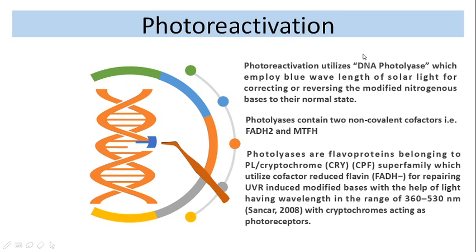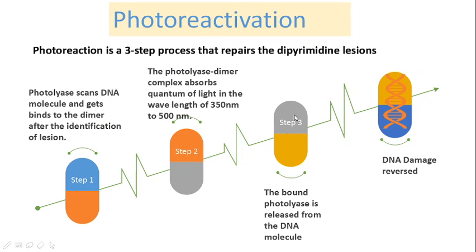In this photoreactivation, it utilizes DNA photolyases which employ a blue wavelength of solar light for correcting or reversing the modified nitrogenous bases to their normal state. These photolyases are flavoproteins belonging to the photolyase/cryptochrome (CPF) superfamily, which utilize a cofactor FAD for repairing the UVR-induced modified bases, with the help of light wavelength in the range of 360 to 530 nanometers, with cryptochromes acting as photoreceptors. This photoreactivation is a three-step process that repairs the dipyrimidine lesion.